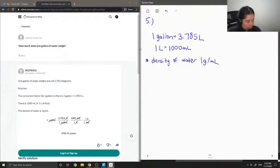For this question in particular, if I have one gallon of water, I can convert this to liters just by using this conversion factor. And then I convert from liters to milliliters. So I'm going to put 1,000 mils on top and one liter at the bottom.